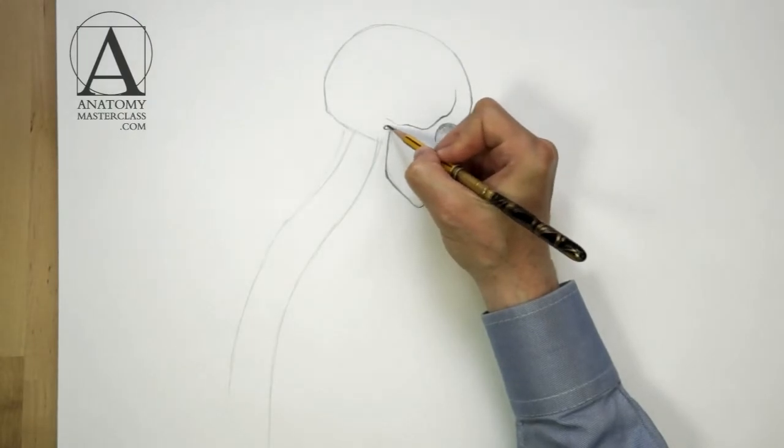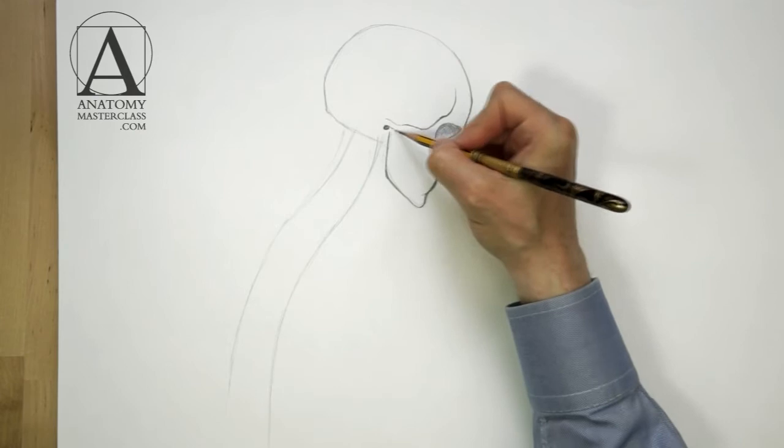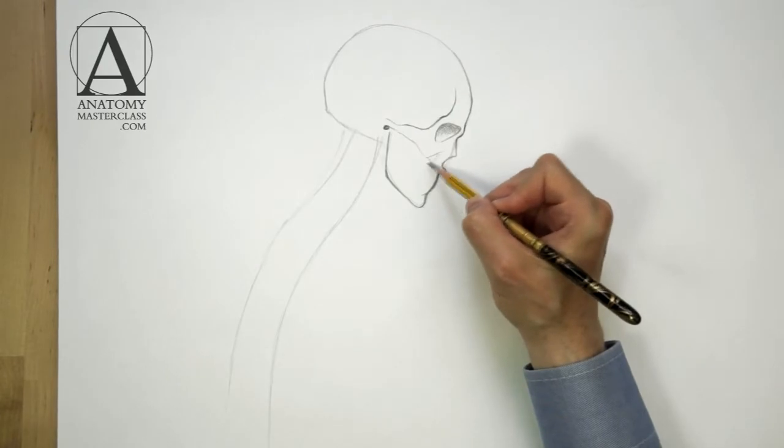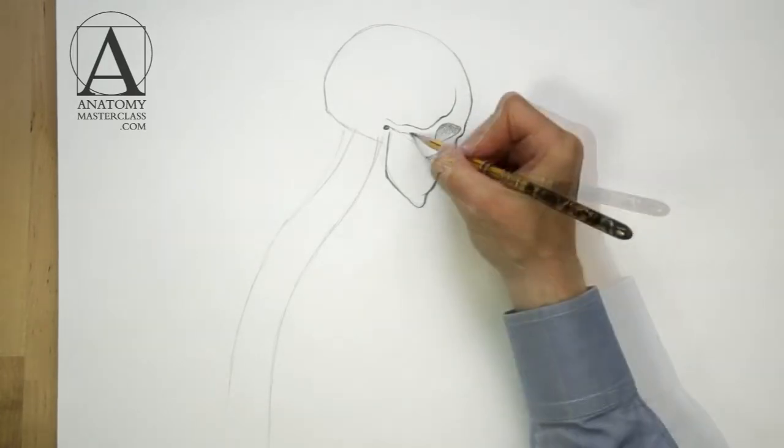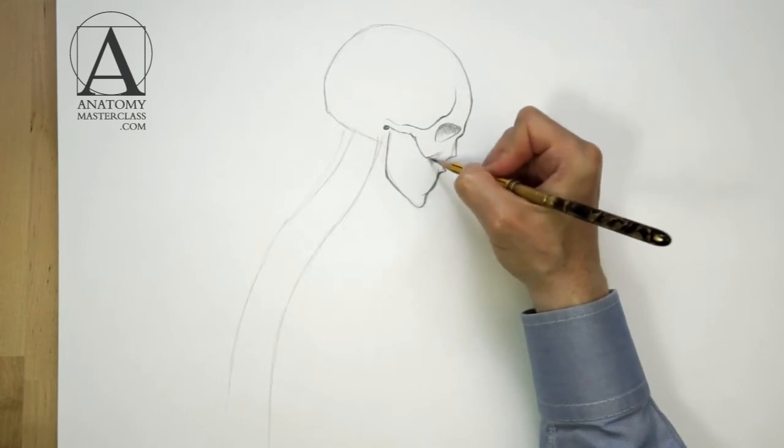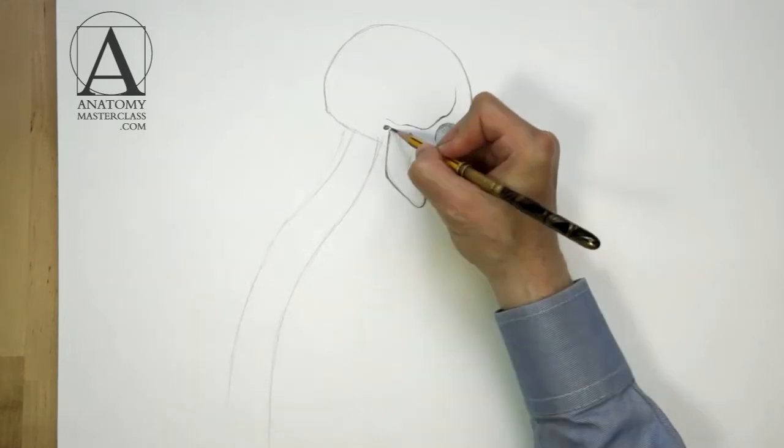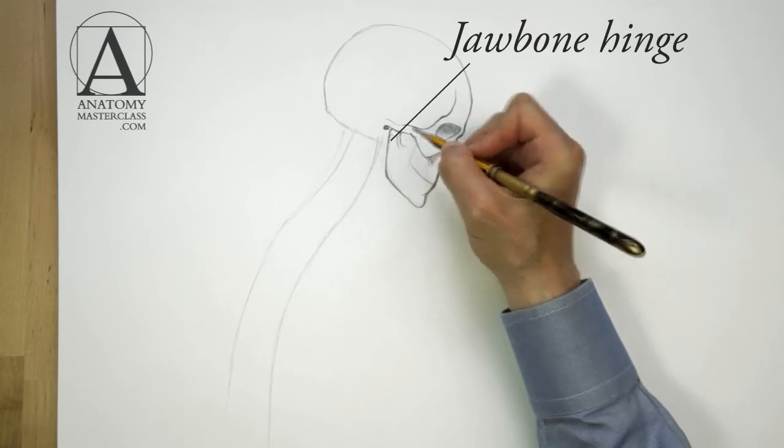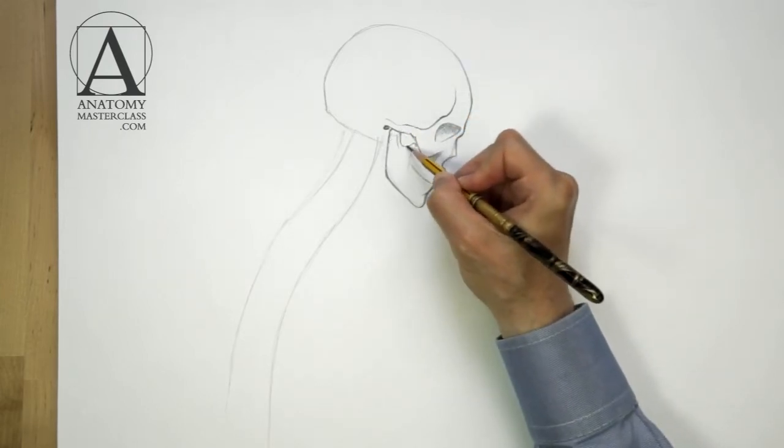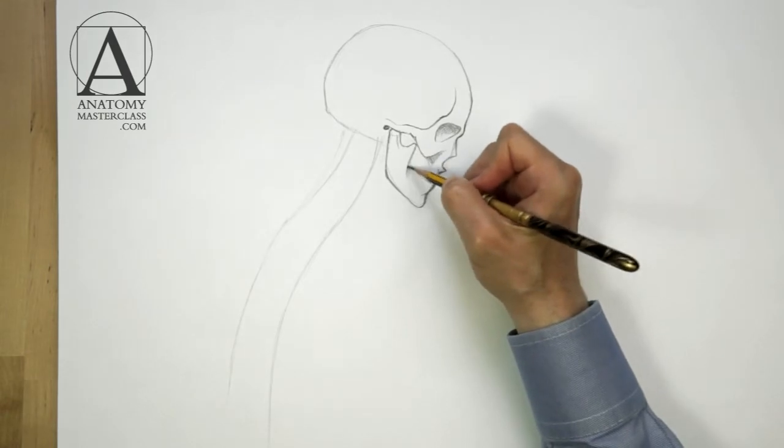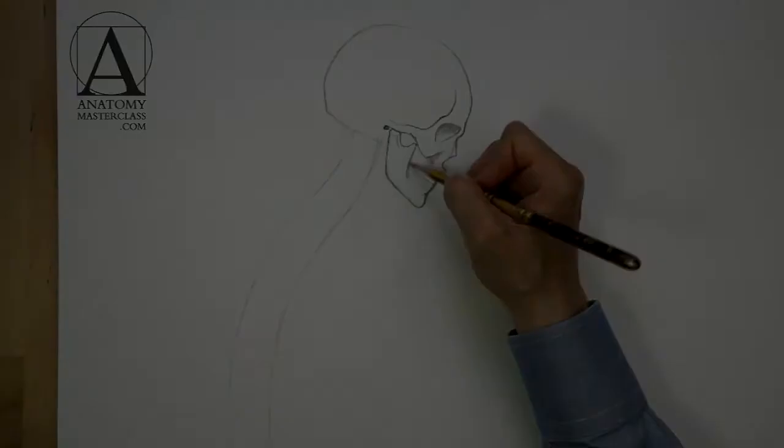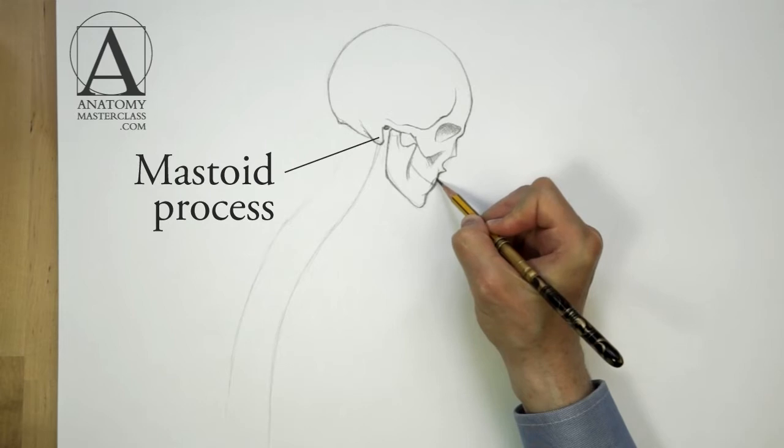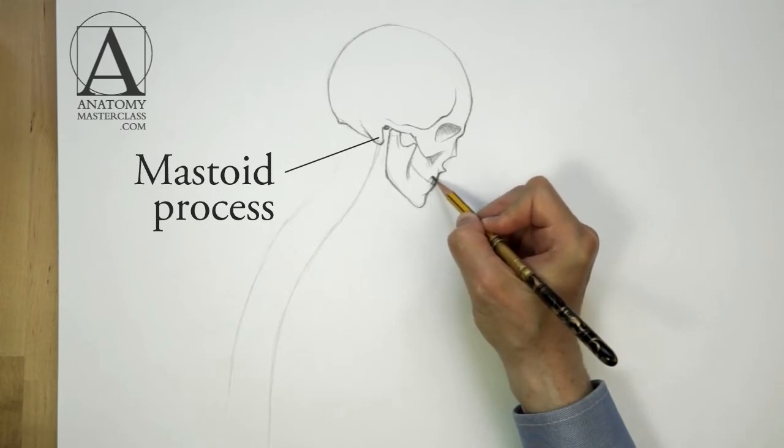The ear channel is located right above the first vertebra of the spine. Above it, there is the cheekbone arch. The hinge of the lower jaw is located just in front of the ear channel underneath the cheekbone arch. Right behind the ear channel, there is the bony process on the base of the skull. This is the place where the neck muscles attach to the skull.